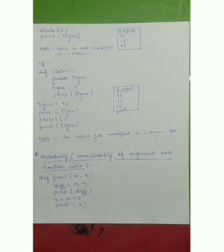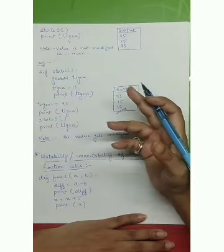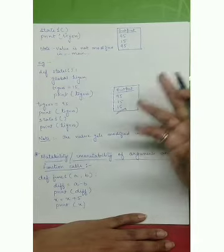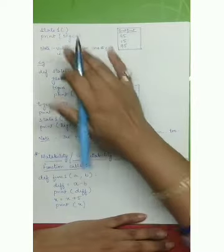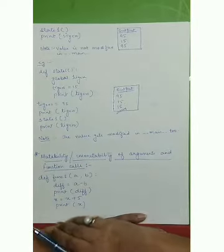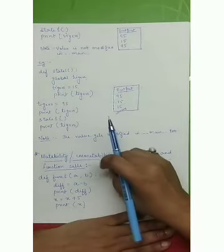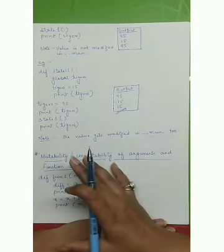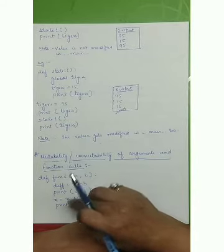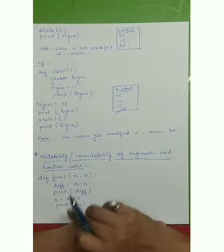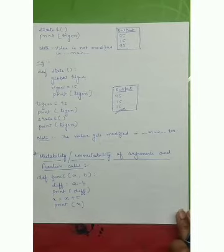Next we look at mutability and immutability of arguments in function calls. Immutable objects include integers, complex numbers, floats, strings, and tuples. In the earlier tigers example with no global keyword, changing the value in local scope did not affect the global scope — because integer variables are immutable. Changes to immutable objects in local scope are not reflected outside.